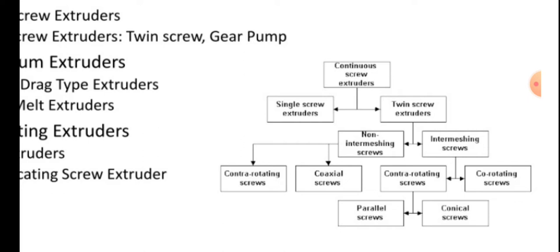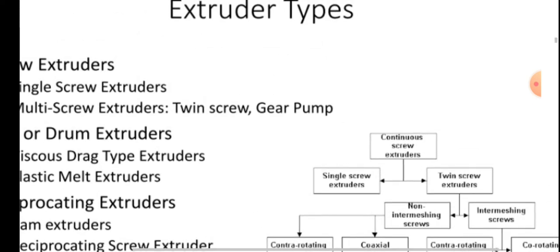Twin screw extruders are non-intermeshing screws and intermeshing screws. In non-intermeshing screws: extra-rotating, contra-rotating screws, and coaxial screws. In intermeshing screws: contra-rotating screw and co-rotating screw. In contra-rotating screws: parallel screws and conical screws. These are the classification of extruder types.